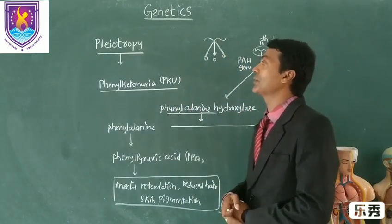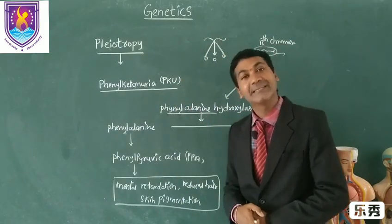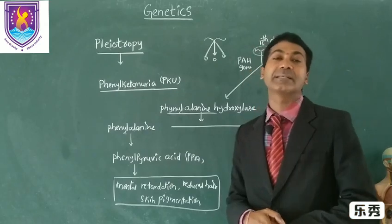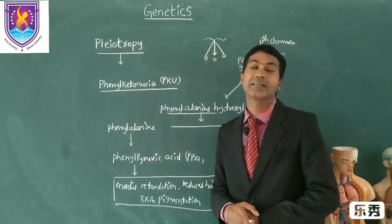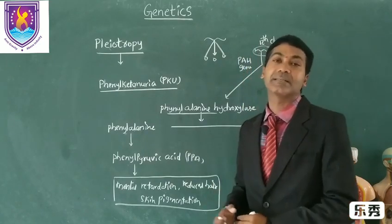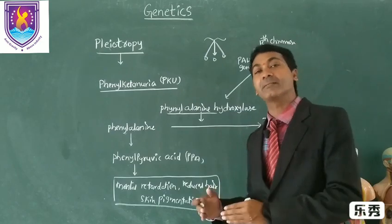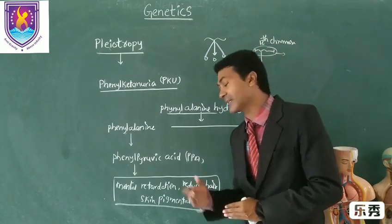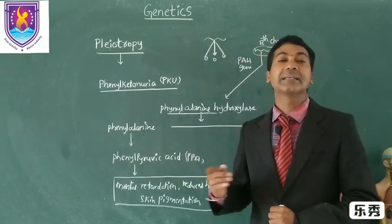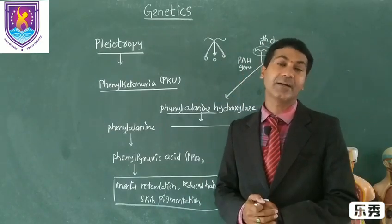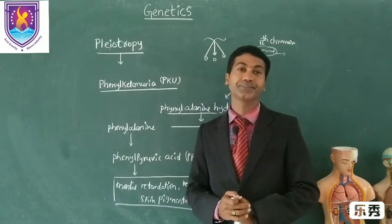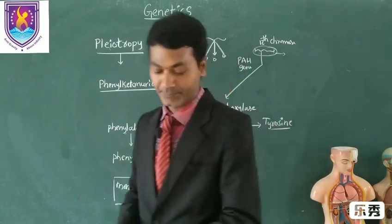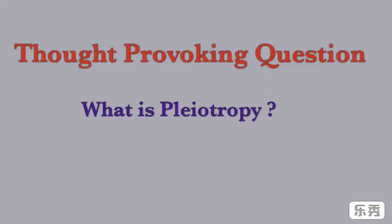Other examples of pleiotropy are cystic fibrosis disorder and sickle cell disorder. Cystic fibrosis is caused by a gene on the 7th chromosome, and sickle cell disorder is caused by a gene on the 11th chromosome. What is pleiotropy? Thank you very much.